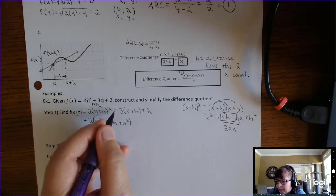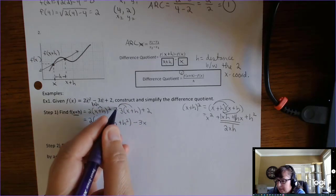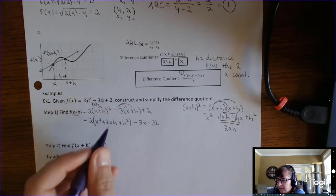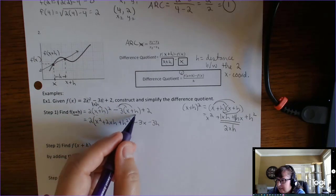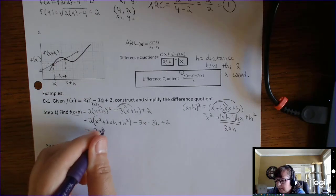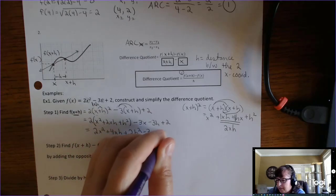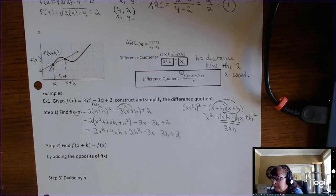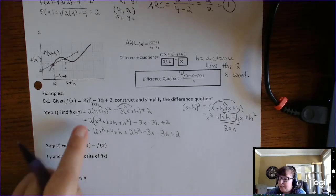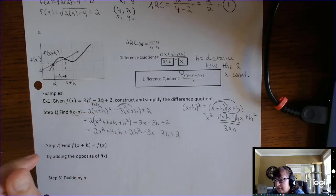Now distribute the negative 3 to both terms — that's a very common error. People rarely miss the negative 3x, but many forget to distribute the negative to the second term. Then distribute the 2 to get 2x squared plus 4xh plus 2h squared, minus 3x minus 3h, plus 2. There are no like terms here, and that's expected when substituting x plus h into a quadratic.